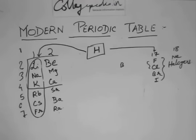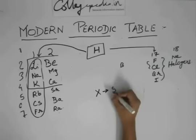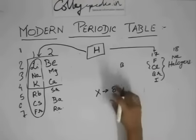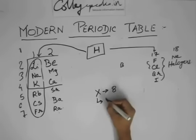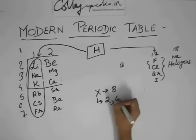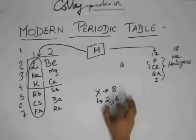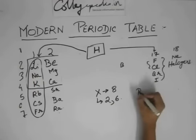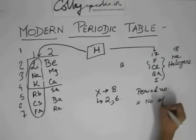You get questions like: element X has atomic number 8 — in which group and which period would you place it in the periodic table? First, write its electronic configuration, which is 2,6. We have 2 shells, so it would be placed in period number 2. The rule is: period number equals the number of shells.